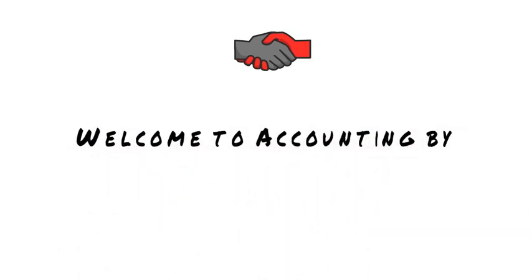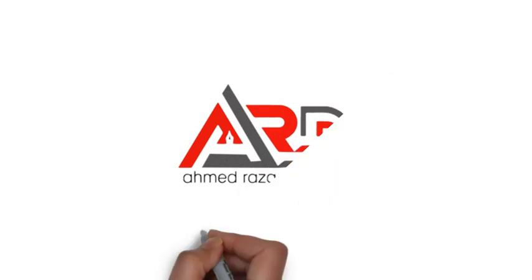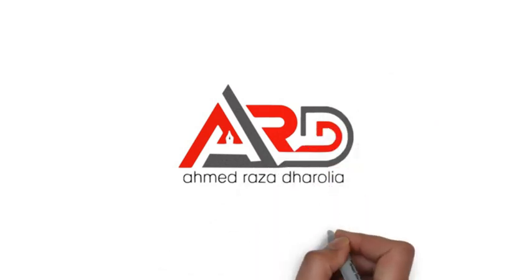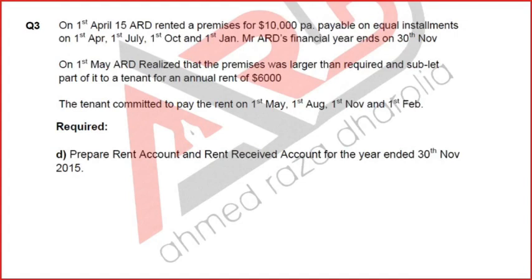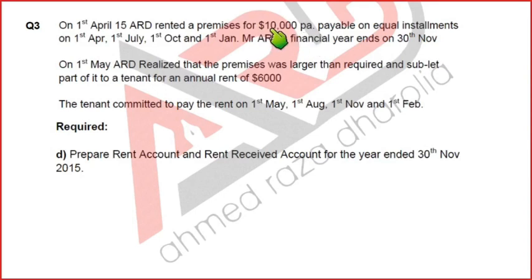Dear students, welcome to Accounting by ARD. The question: on 1st April 2015, ARD rented a premises for £10,000 per annum. This means we have taken a premises on rent and the annual rent is payable in equal installments.